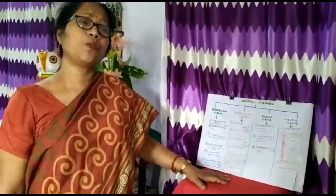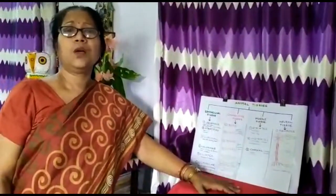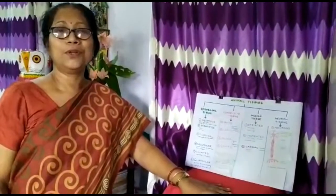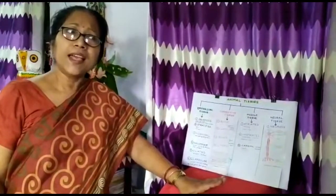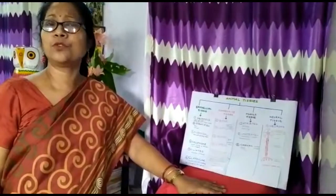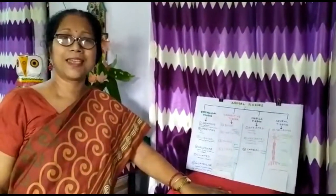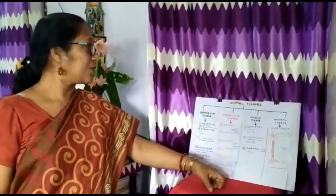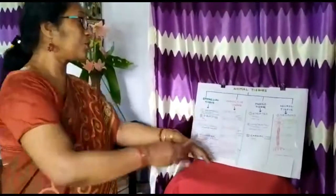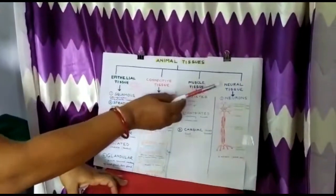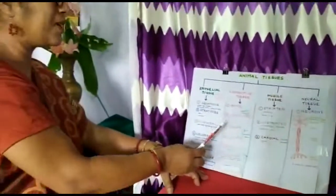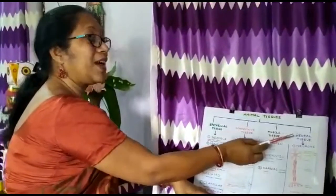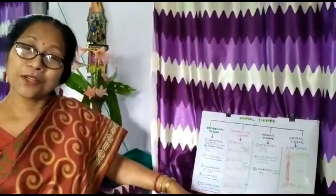Students always say animal tissues are so hard to remember. I'm going to teach you a trick to remember animal tissues — it will become very easy. You know, when someone comes in your neighborhood, don't you remember the names as Mr. Roy, Mr. Sen, Mr. Varma, Mr. Prasad? In the same way, you are going to remember the names of the animal tissues: epithelial tissue, connective tissue, muscle tissue, and neural tissue — just like neighbors, Mr. Epithelial tissue, Mr. Connective tissue, the muscle tissue family, and the neural tissue family.